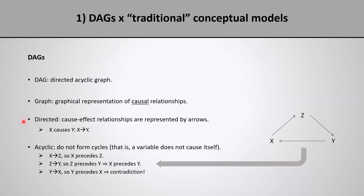DAGs are directed because cause-effect relationships are represented by arrows. So if I want to indicate that variable X causes variable Y, I'm going to draw an arrow from X into Y.